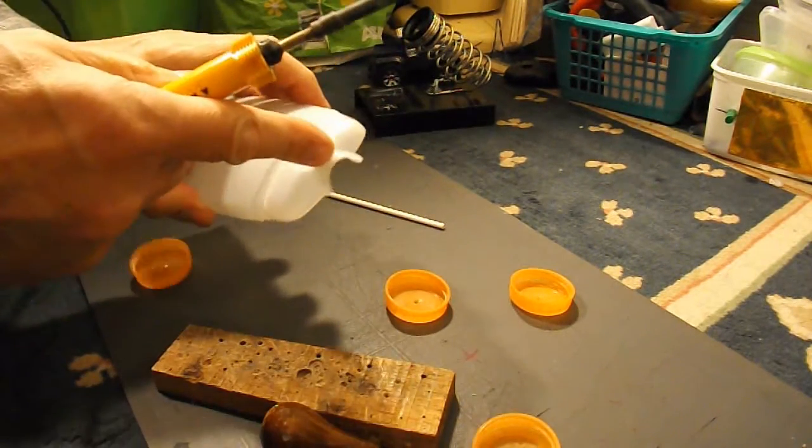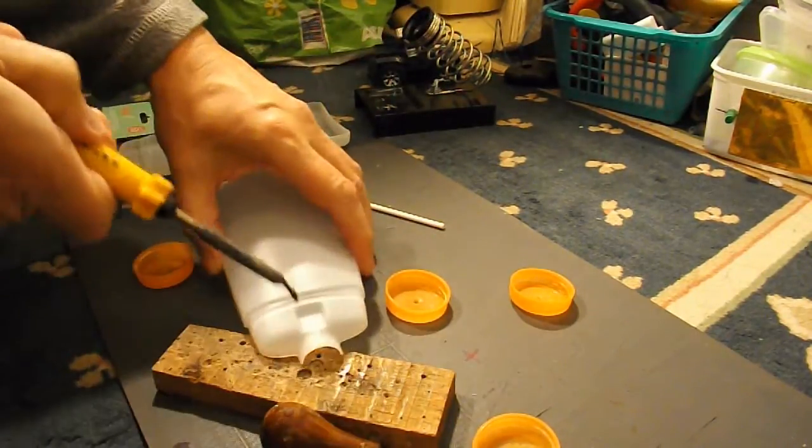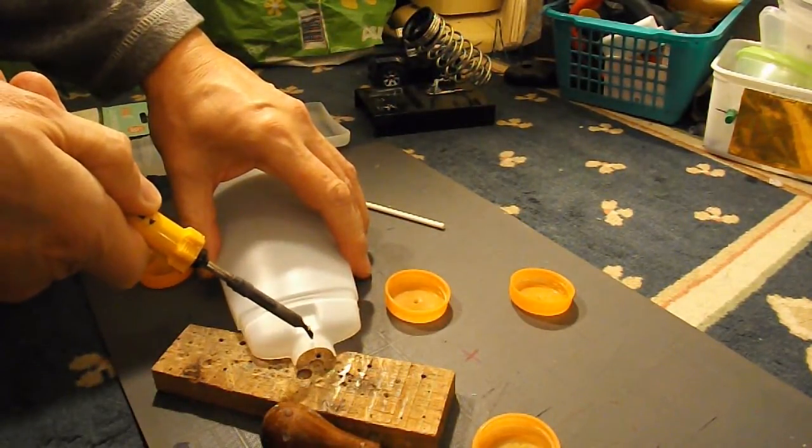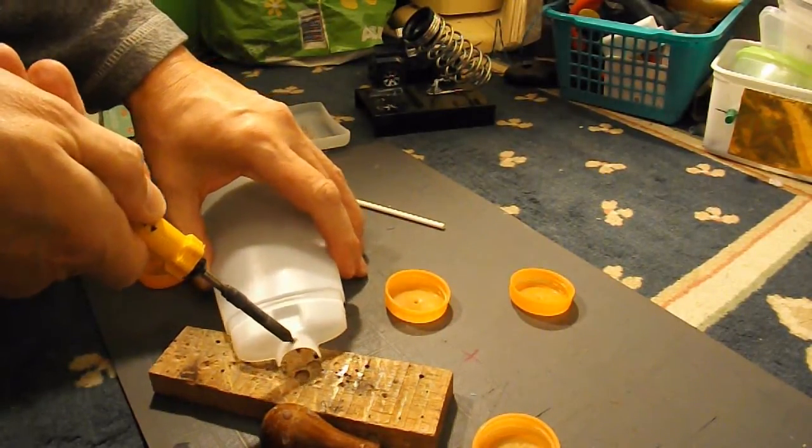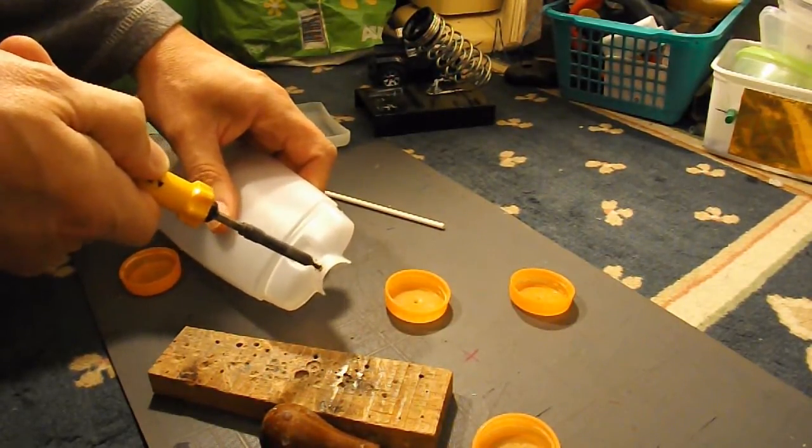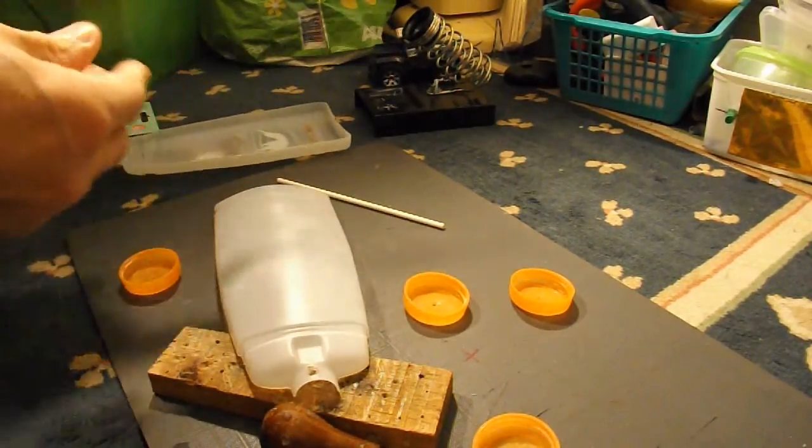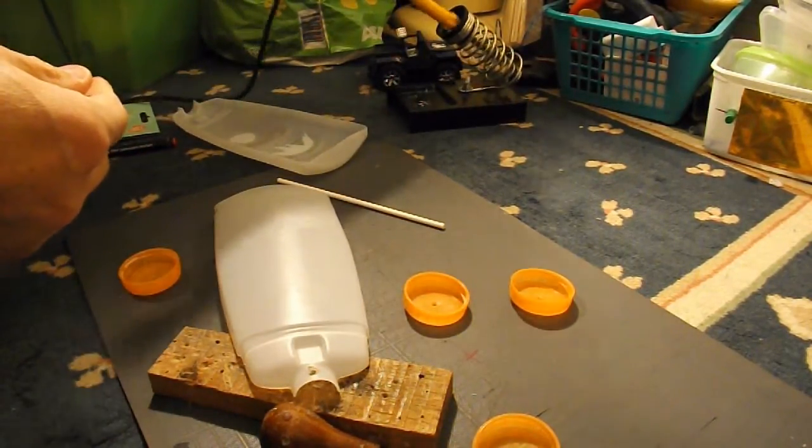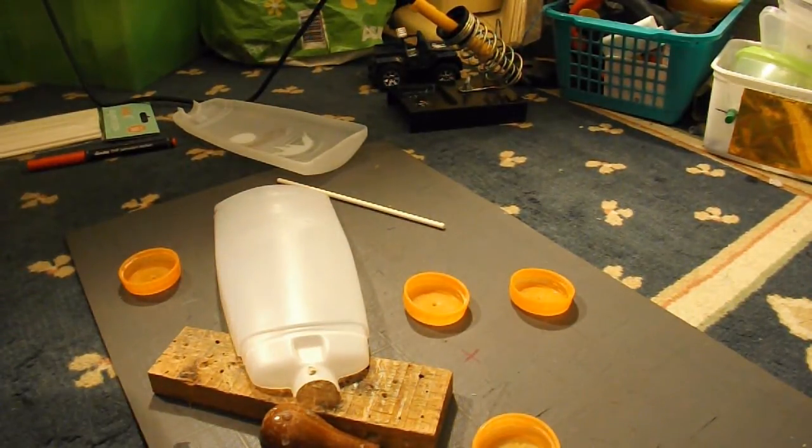We also need a little hole here to attach the rubber band to, so I'll just poke that straight through. I'll turn the soldering iron off again because we don't need it.